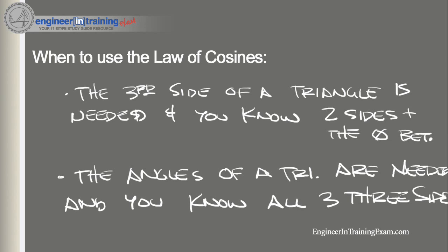And you know all three sides. So to use the law of cosines, essentially, you need to know there needs to be three things that you need to know. Number one, you need to know either two sides and the angle between, or if you know all the sides, you're able to determine all the angles within the triangle by plugging in all your knowns.